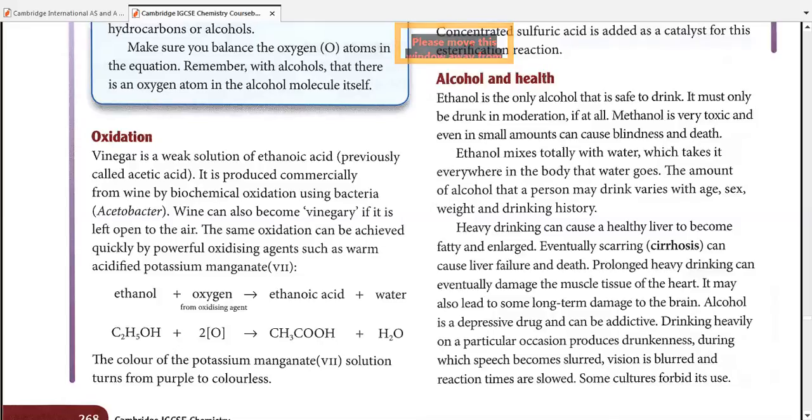If you take a little amount, then you will try again for that amount. Then when your body is habitual on one amount, you will increase the amount. The amount of alcohol keeps on increasing for a person. Drinking heavily on a particular occasion produces drunkenness. Drunkenness is actually a phenomenon in which speech becomes slurred, vision becomes blurred, and the reaction times are slow. That's why you will see in movies or with other people, their reaction times are slow, their vision is not okay, they are blurred, their speech is not okay, they are slurred. Drunkenness is actually defined by three factors. Some cultures, some religions forbid its use.